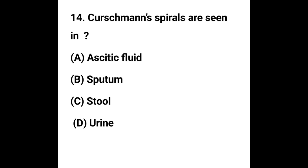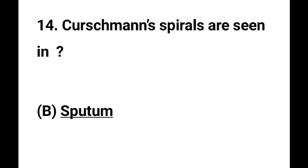Question number 14. Curschmann spirals are seen in: Option A - Ascitic fluid, Option B - Sputum, Option C - Stool, Option D - Urine. The correct answer is Option B, Sputum. Curschmann spirals are seen in sputum in bronchial asthma.